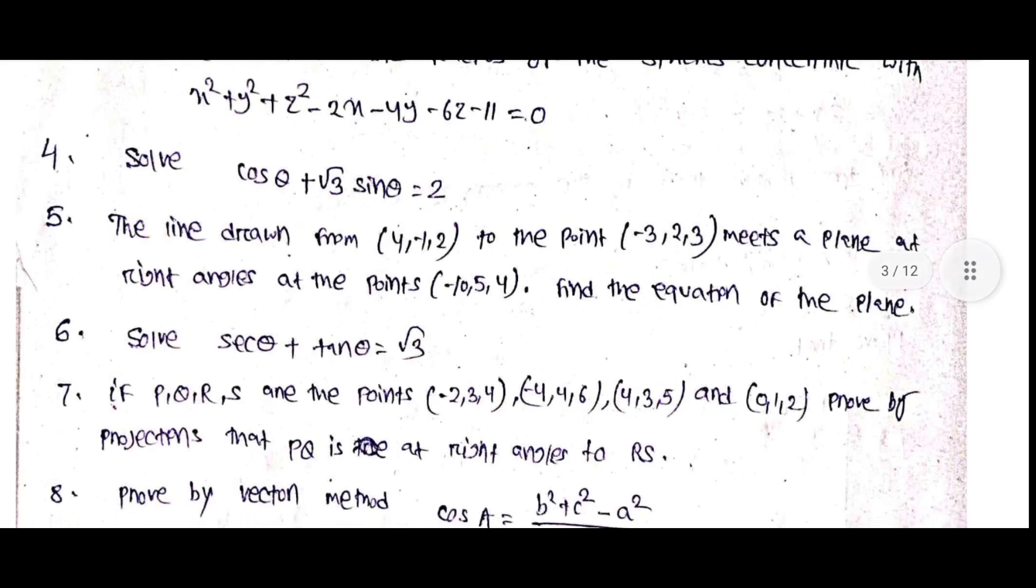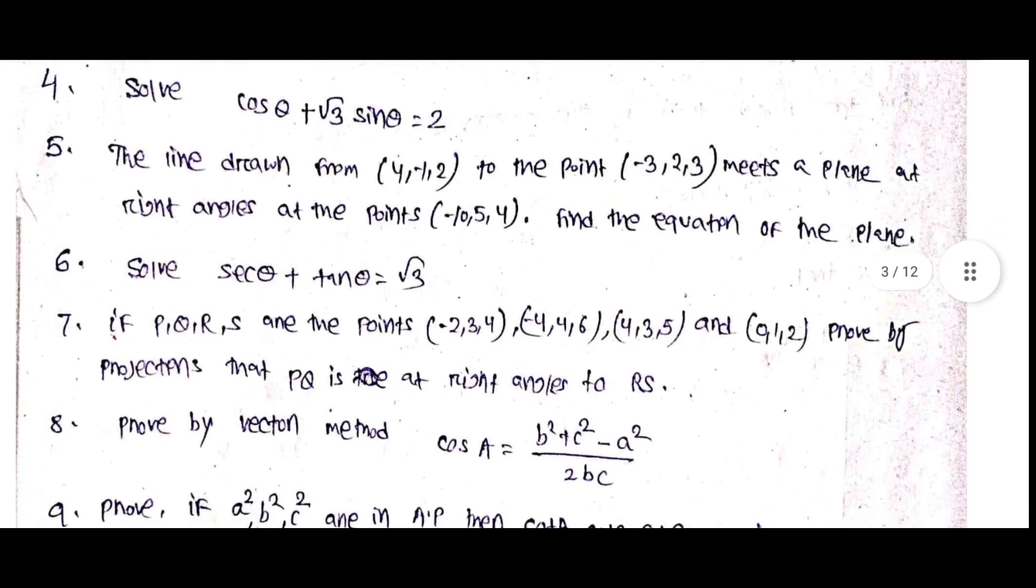Solve cos theta plus root 3 sin theta equal to 2. The line drawn from 4, minus 1, 2 to the point minus 3, 2, 3 meets a plane at right angle at the point minus 10, 5, 4. Find the equation of the plane.